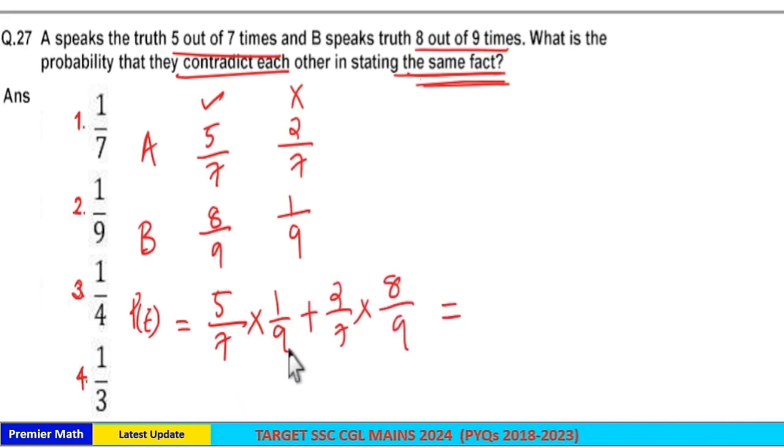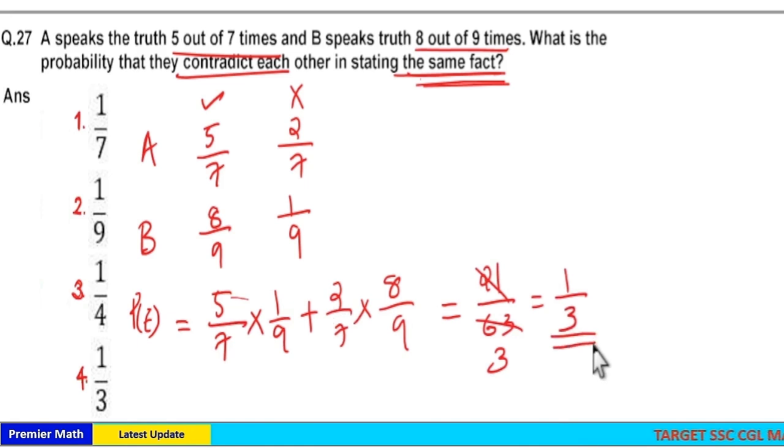Now this is equal to 7 into 9, 63 is the denominator. 5 plus 16, 21 is the numerator. 21 goes 3 times in 63, so 1 by 3. Every one third time they contradict each other. Option 4 is your answer.